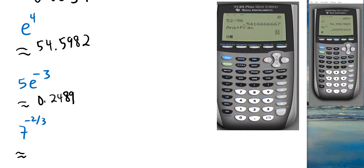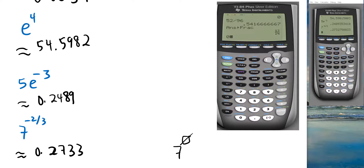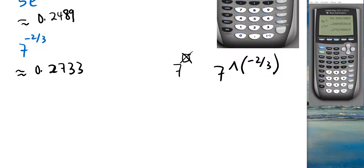For 7 raised to the power of negative two-thirds: press 7, then the exponent key, then type negative 2 divided by 3. The calculator puts it all in the exponent and gives approximately 0.2733. On calculators without the small exponent box, you must wrap the exponent in parentheses — type 7, exponent key, open parenthesis, negative 2/3, close parenthesis — otherwise the calculator misreads the expression.